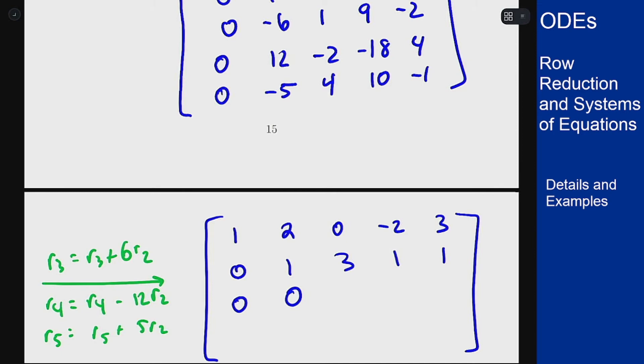I started with a 1 here so 1 plus 6 times 3 is going to be 19. 9 plus 6 times 1 is going to be 15. And negative 2 plus 6 times 1 is going to be 4.